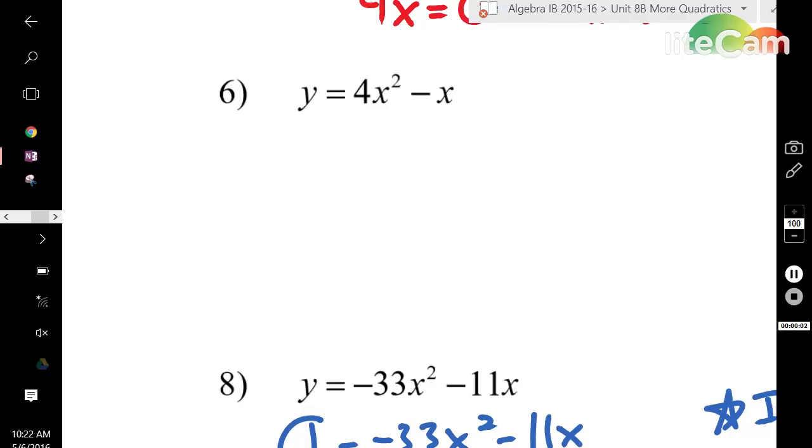In this video, you're going to learn how to factor out a GCF in order to find zeros of a quadratic. Looking at number 6, we have y equals 4x squared minus x. If we are finding zeros of a quadratic function, the first thing we do is set the equation equal to zero.